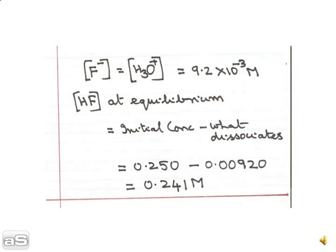We have to calculate the value of HF at equilibrium. For this, we need to know the initial concentration of HF and how much dissociates. The HF at equilibrium equals the initial concentration minus what dissociates. The initial concentration is 0.25 molar and what dissociates is 0.00920, so we get the value for HF at equilibrium as 0.241 molar.